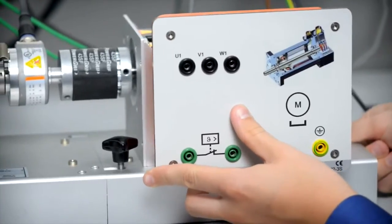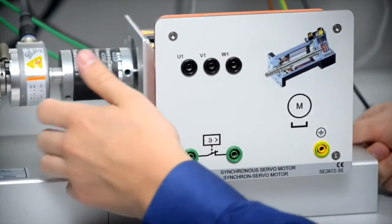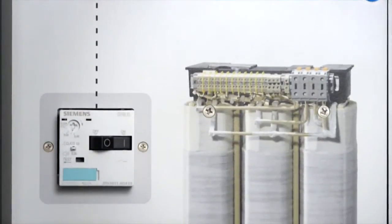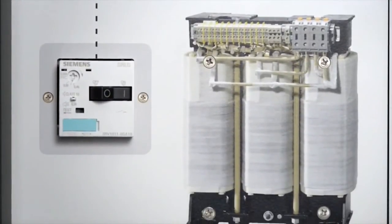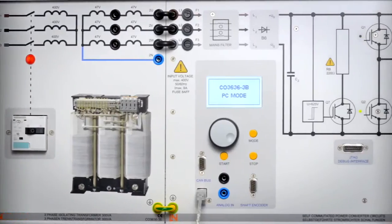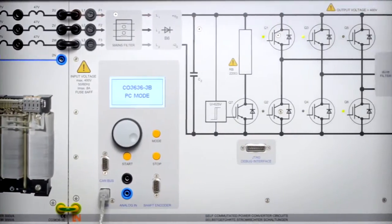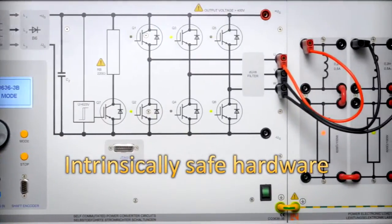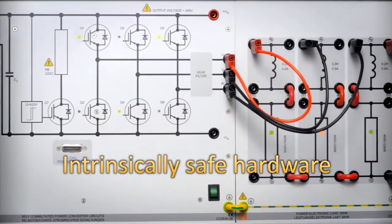The experiments are totally safe for the students. The isolating transformer decouples the system from the mains. The control and load unit switches off automatically, for example, in the event of excessive amperage, and thus protects not only the student but also the device itself.